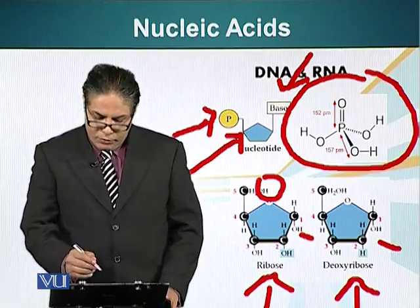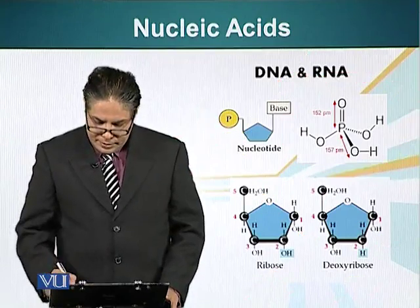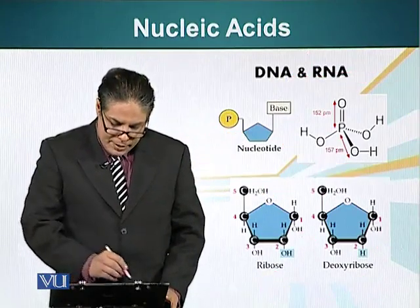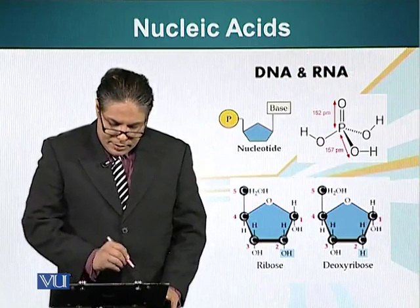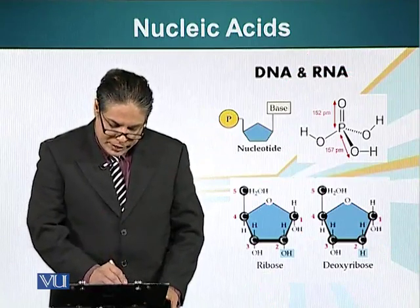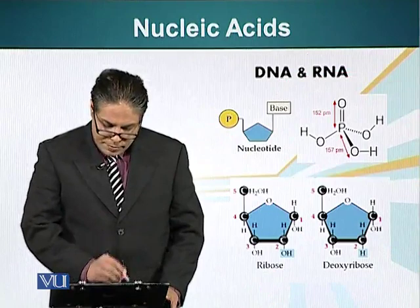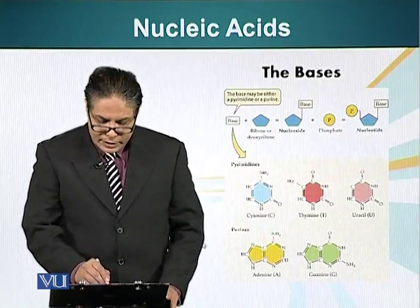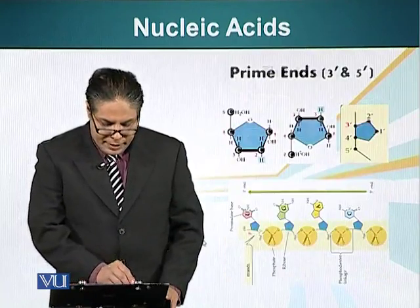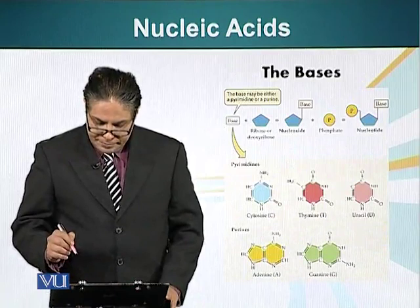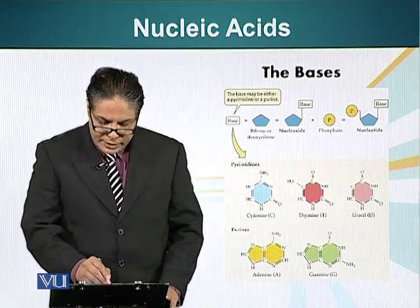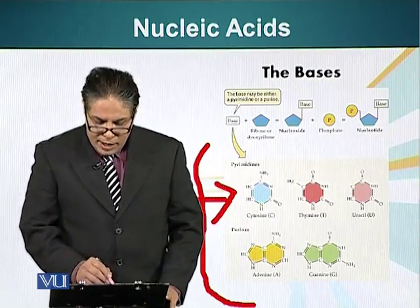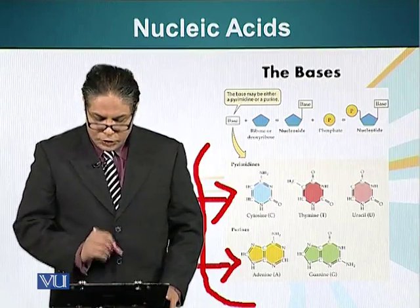Now let's look at the structure of nitrogenous bases. These nitrogenous bases are cyclic compounds and can be divided into two groups depending upon their structure: the pyrimidines and purines. Pyrimidines have one cyclic structure, whereas purines have two cyclic structures fused together.